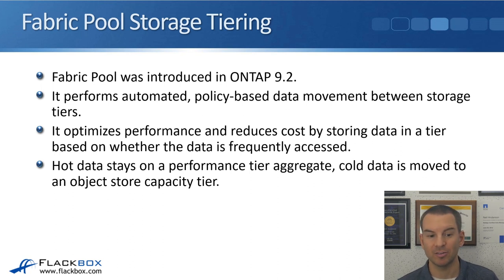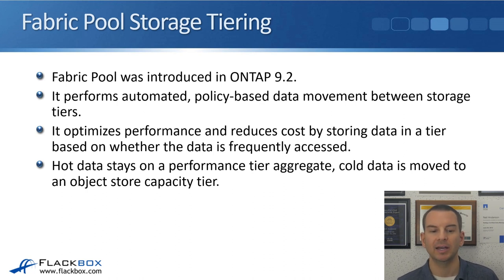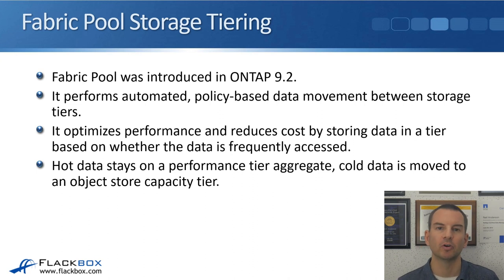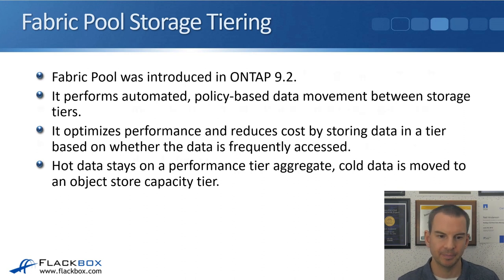The frequently accessed hot data stays on a performance tier aggregate, and the cold data is moved to an object store capacity tier. So your frequently accessed data gets high performance at higher cost, while your less frequently accessed data gets low cost but lower performance. By doing that, you get a good balance between performance and cost.